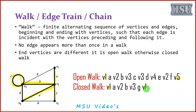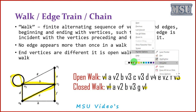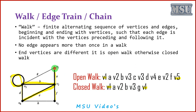In a closed walk, the starting vertex is the same as the ending vertex. For example, starting from v1, visiting v2 via edge a, then v3 via edge b, and then returning to v1 via edge g. So v1, v2, v3, and back to v1 — this is a closed walk.